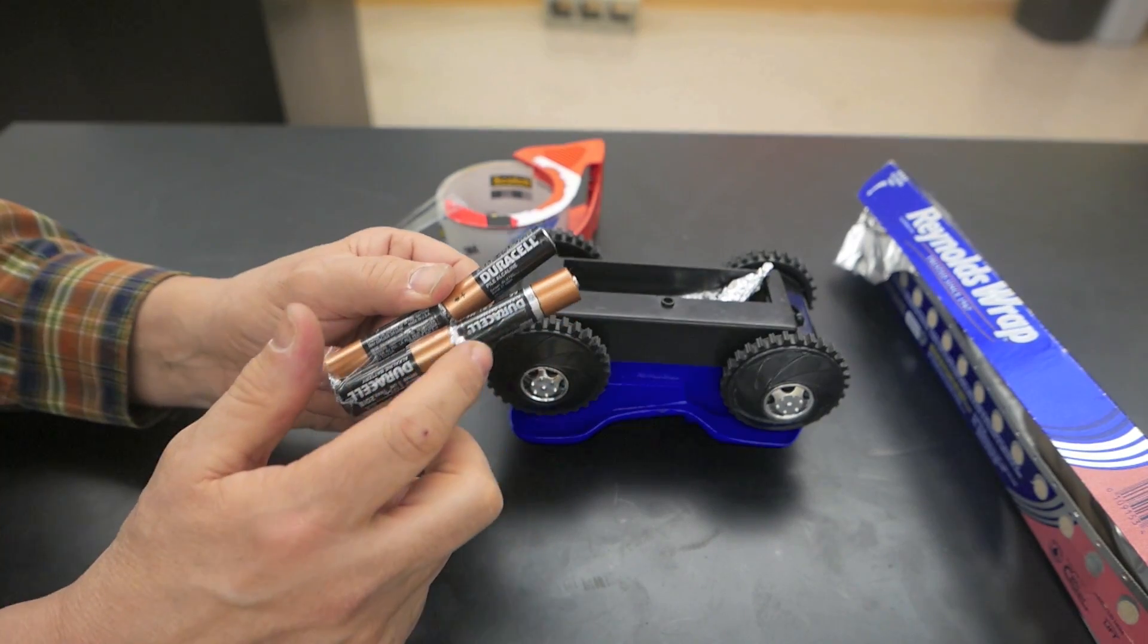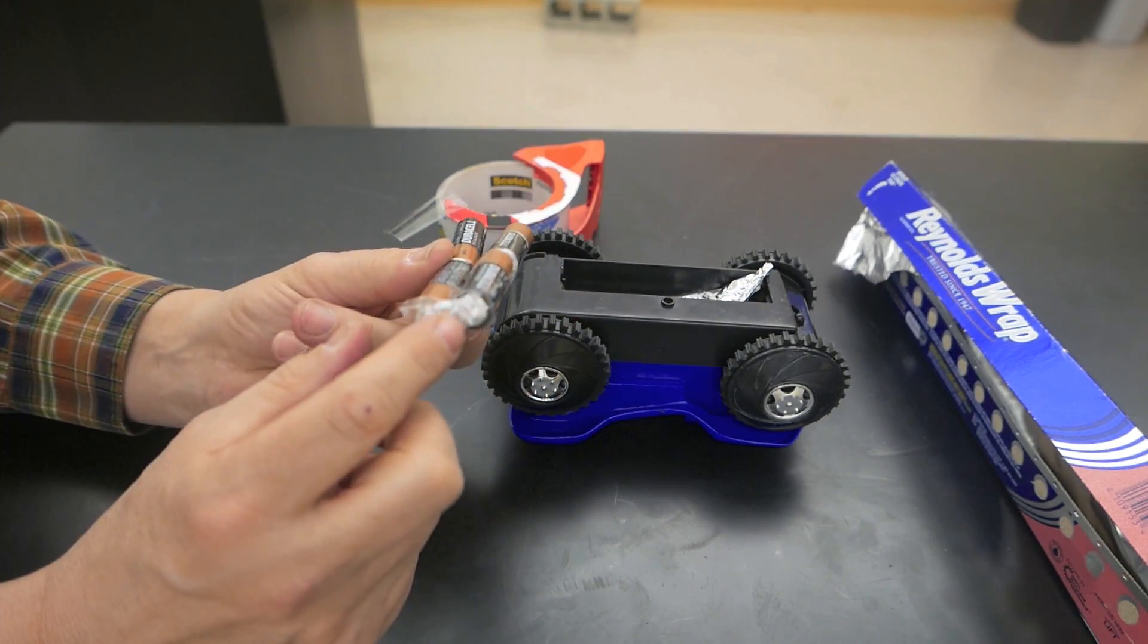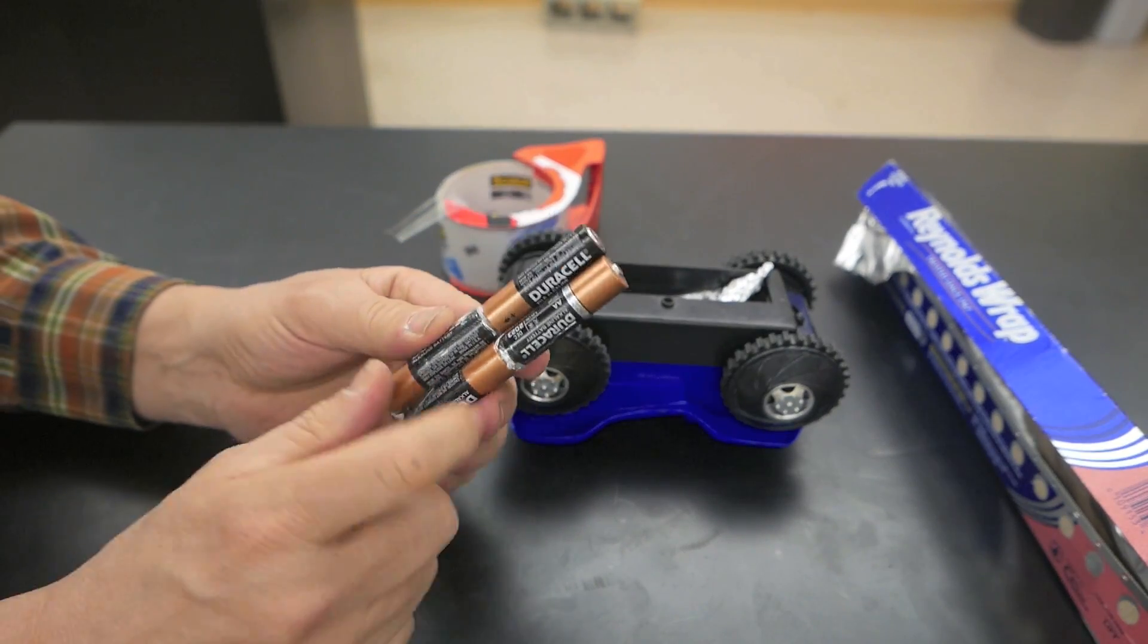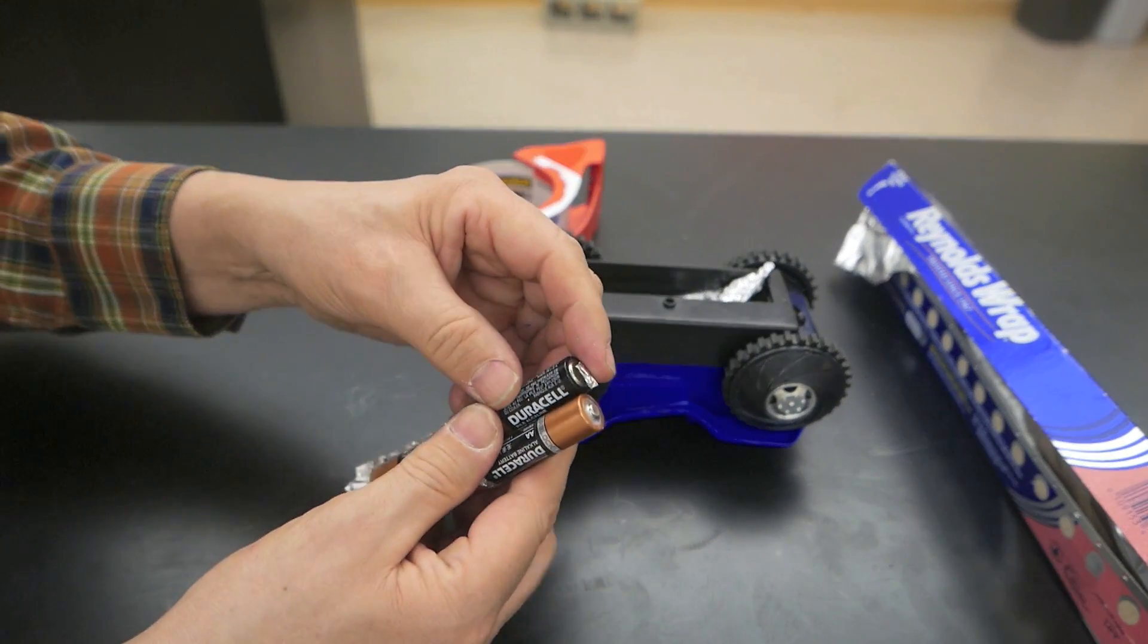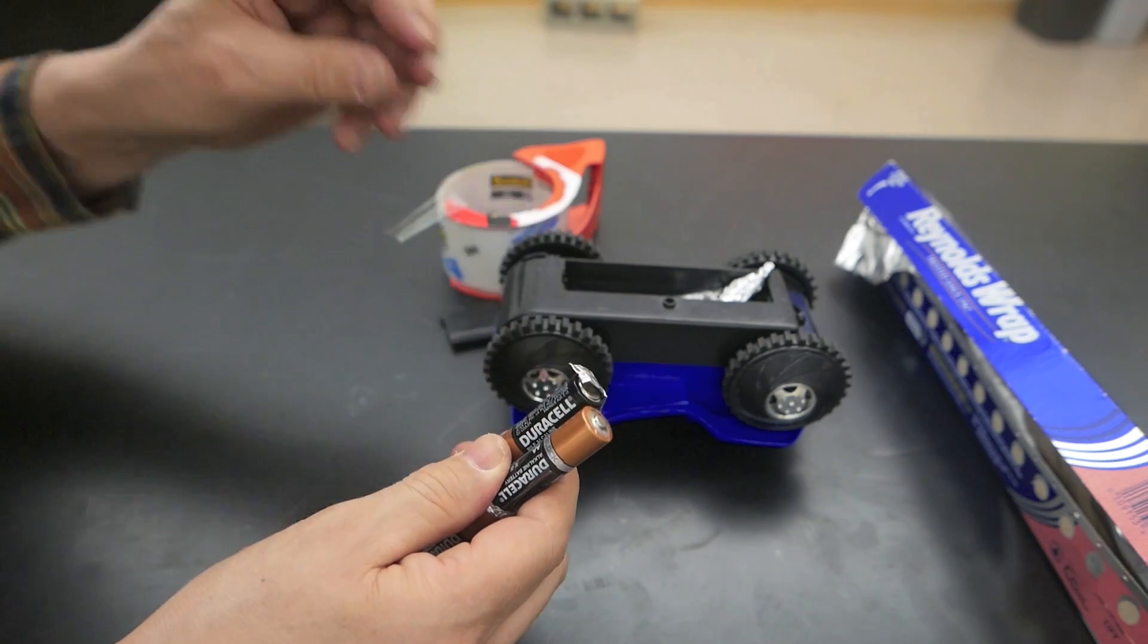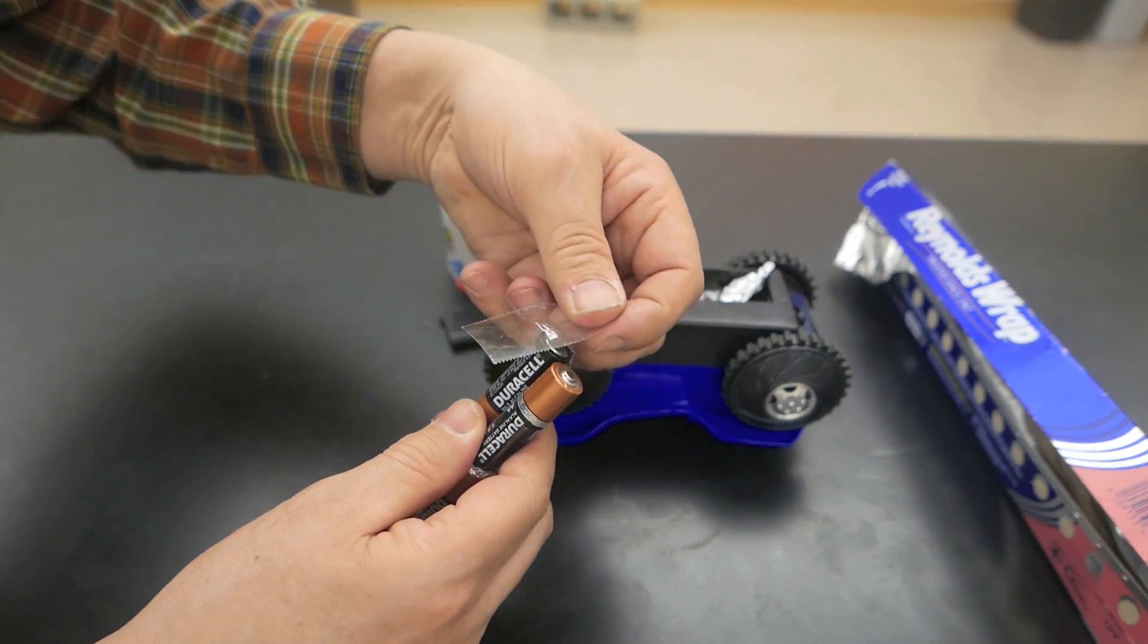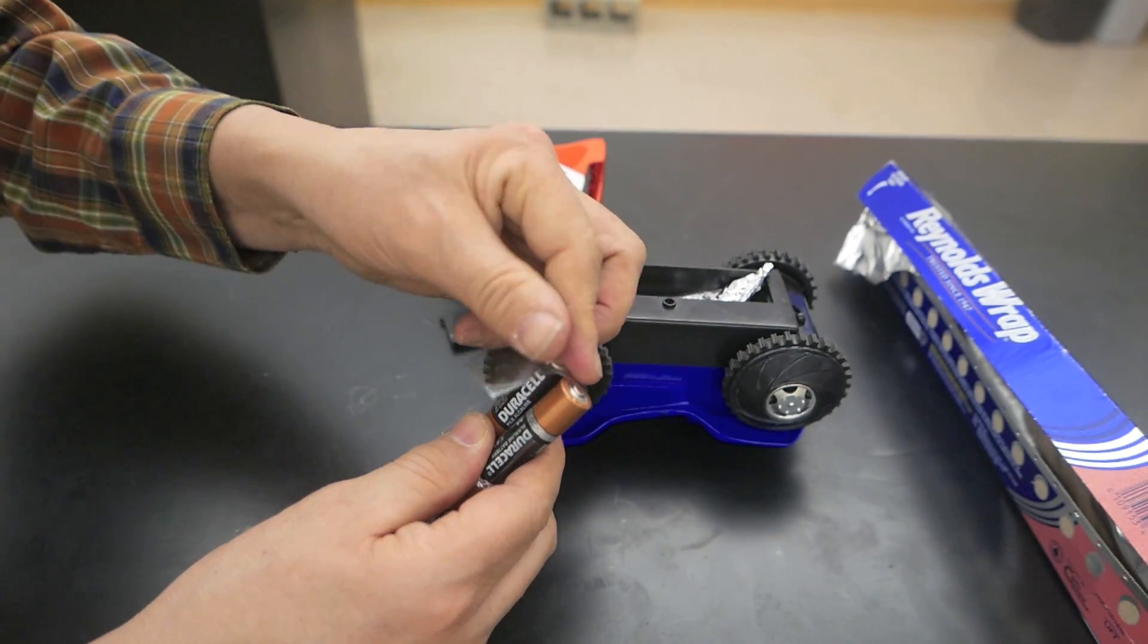Or I can use four AA batteries, end to end, a little piece of aluminum foil here and then cover it with tape. I'm going to take a piece of aluminum foil and connect it to the negative end of the battery series. Use a piece of tape and cover that to hold it in place.